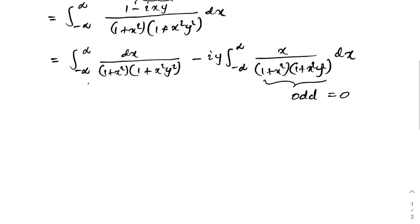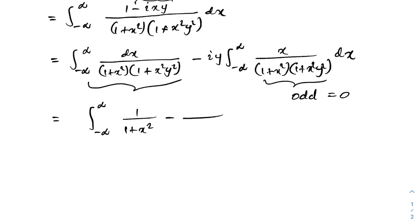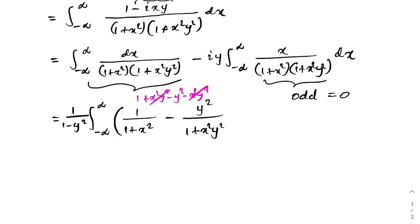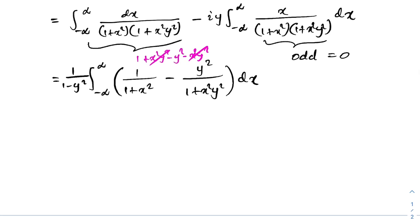We simplify the remaining integral from -∞ to ∞ of 1 over (1 + x²)(1 + x²y²) dx. Taking y² as a factor and applying partial fractions, the numerator simplifies to (1 - y²) after cancellation of x²y² terms, giving a factor of 1/(1 - y²) out front.